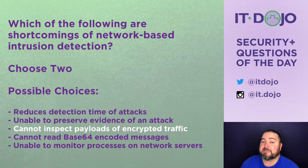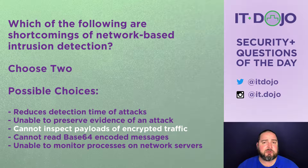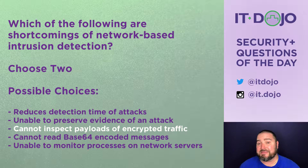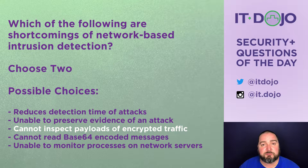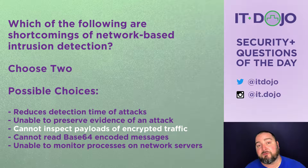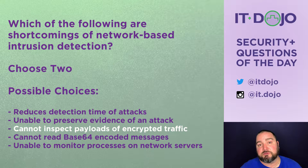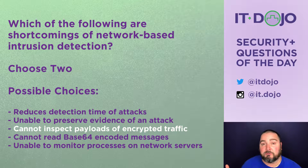The third choice says it cannot inspect encrypted payloads — that is absolutely a problem. If traffic is encrypted using SSL, TLS, IPsec VPN, or SSH, the IDS is limited in its ability to inspect it. It's a known tactic that attackers will intentionally encrypt their traffic once they've gained a foothold in your network so the IDS can't see what they're doing. So that is definitely a shortcoming of network-based intrusion detection.